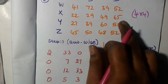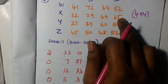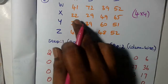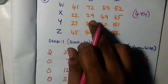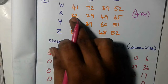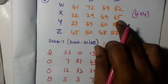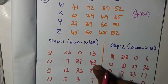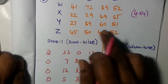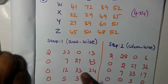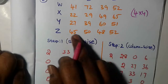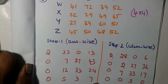In the second row, the smallest number is 22. Subtract 22 from all entries: 0, 29 minus 22 is 7, 49 minus 22 is 27, 65 minus 22 is 43. Similarly, in the third row the smallest number is 27, subtract from all entries. In the last row the smallest number is 45, subtract 45 from all entries.